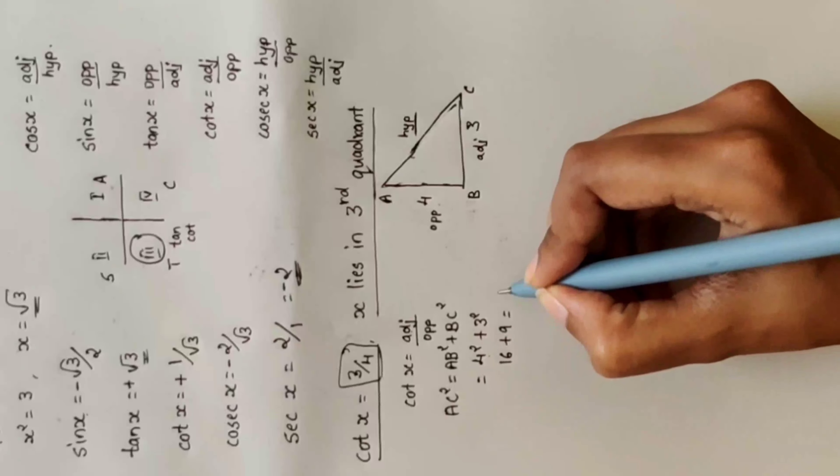Now apply signs for the second quadrant. Tan is negative and cot is also negative. Cos is negative and secant is negative. Only sin and cosec are positive in the second quadrant.